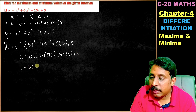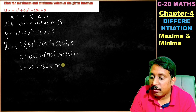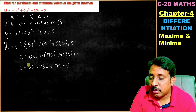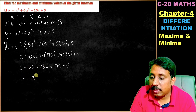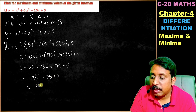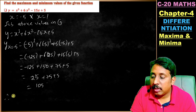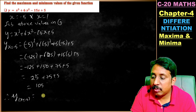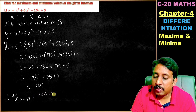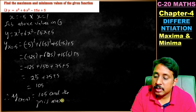Calculating: -125 + 6(25) + 75 + 5 = -125 + 150 + 75 + 5 = 105. Therefore y at x = -5 is equal to 105, and the function is maximum at this point.